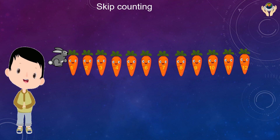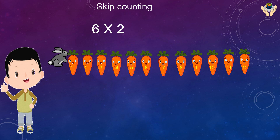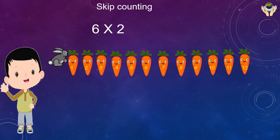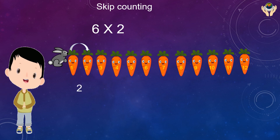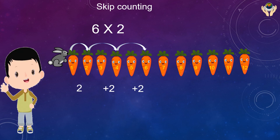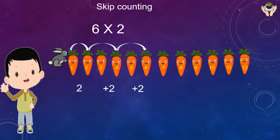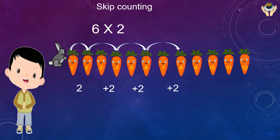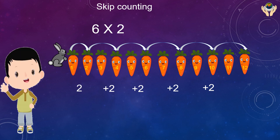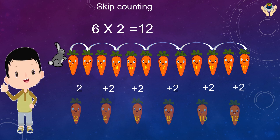Now we are going to do the multiplication for six and two using skip counting. We do the skip counting six times: first time 1, 2; second time 3, 4; third time 5, 6; fourth time 7, 8; fifth time 9, 10; sixth time 11 and 12. The answer is 12.